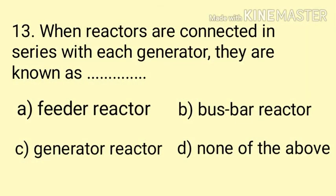Question number 13. When reactors are connected in series with each generator, they are known as dash. Dekho, reactor agar connected hoga generator ke saath series mein, to yeh generator ko protect karega. Isliye isko kaha jaata hai generator reactor. Here the correct answer is Option C — generator reactor.